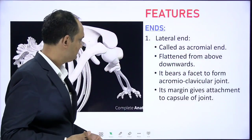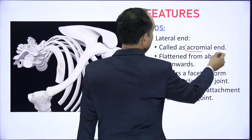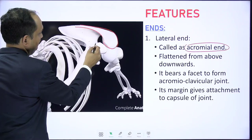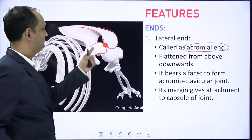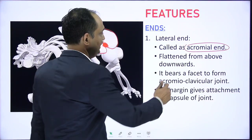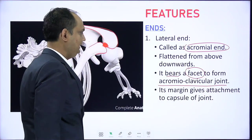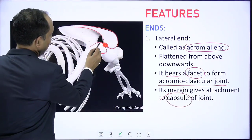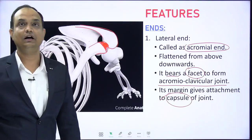The lateral end is known as the acromial end because the clavicle makes a joint with the acromion process of the scapula — this joint is known as the acromioclavicular joint. The end is flattened from above downward and bears a facet forming this synovial acromioclavicular joint. The margins of this area give attachment to the capsule of the acromioclavicular joint.